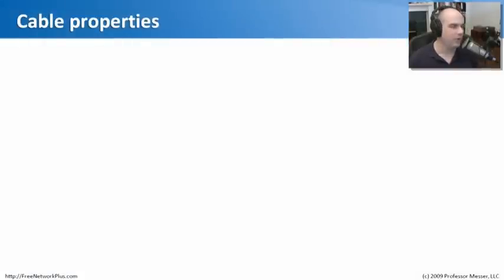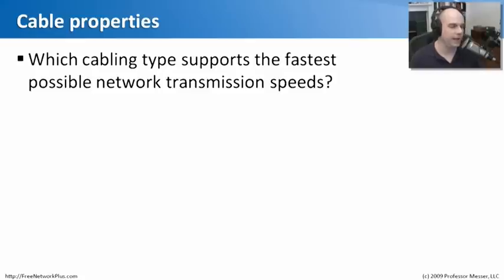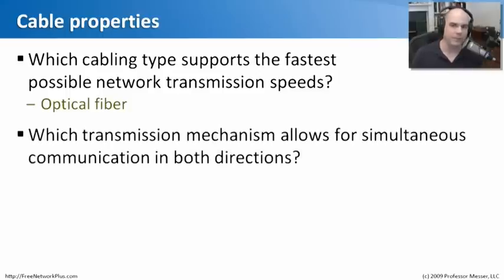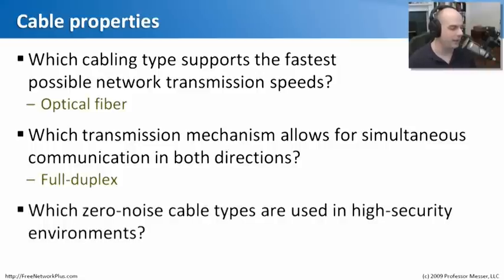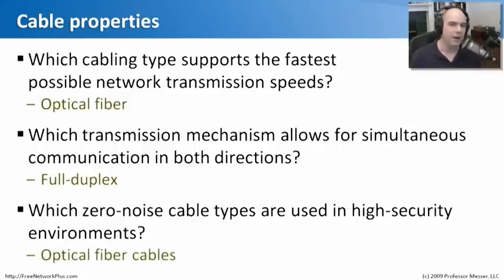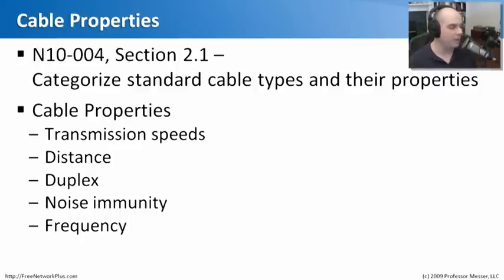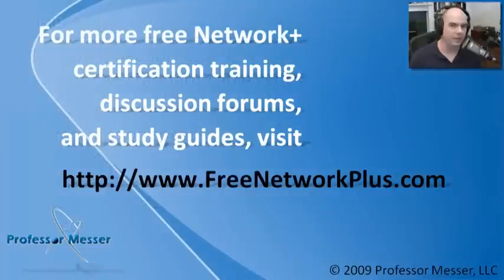Let's see how much we've learned. Which cabling type supports the fastest possible network transmission speeds? We know that would be optical fiber. Which transmission mechanism allows for simultaneous communication in both directions? It's full-duplex communication, which allows us to send at the same time we are receiving. Which zero-noise cable types are used in high-security environments? Almost always you will see optical fiber cables used when you have that high level of security. That's our module on cable properties, covering transmission speeds, distances, duplex, noise immunity, and frequency.